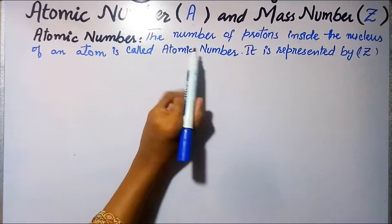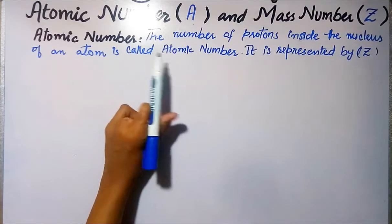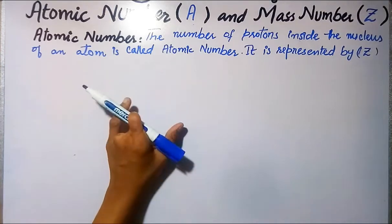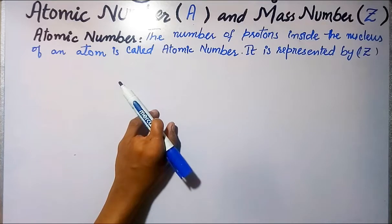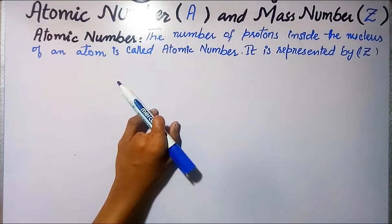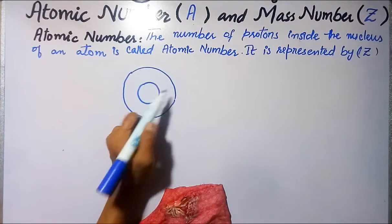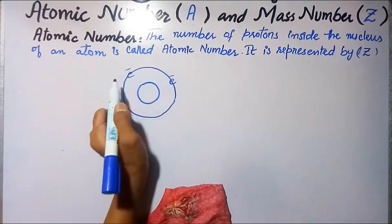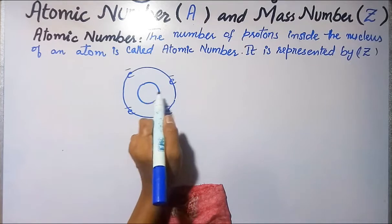Atomic number is the number of protons inside the nucleus of an atom. It is represented by Z. In our nucleus, the number of protons in any atom is called atomic number. This is the nucleus, and this is the outermost shell in which electrons will revolve.